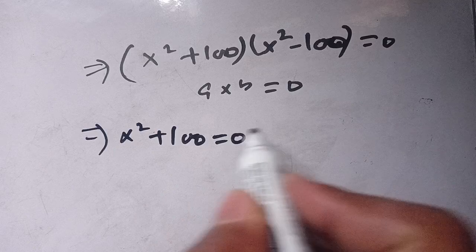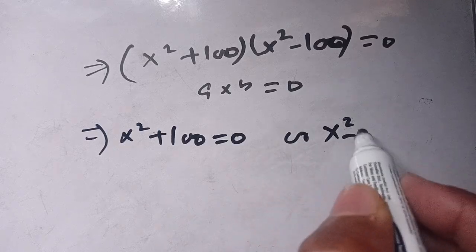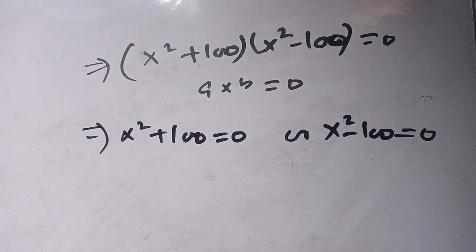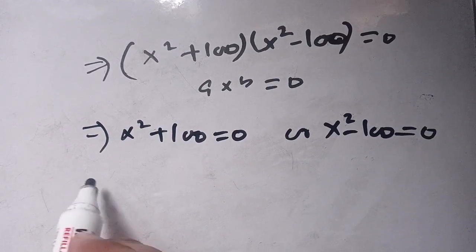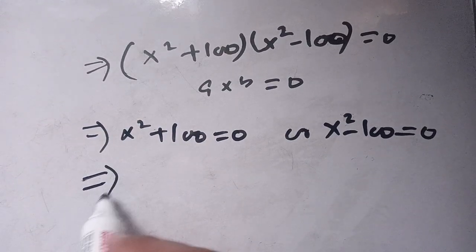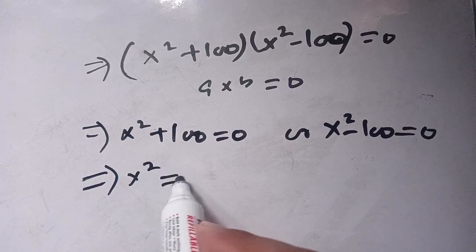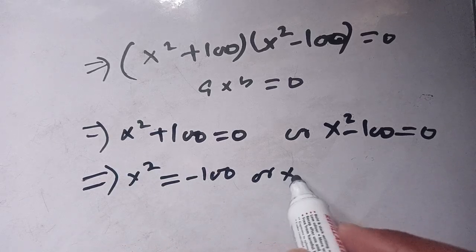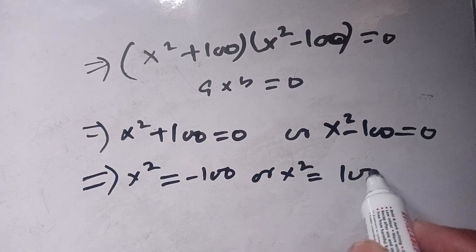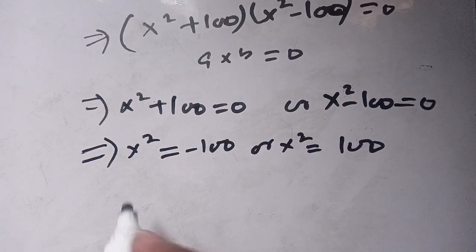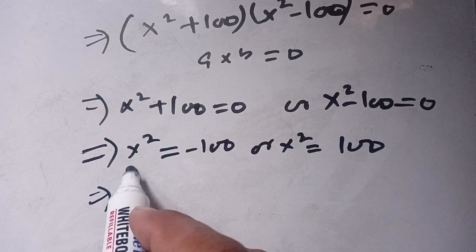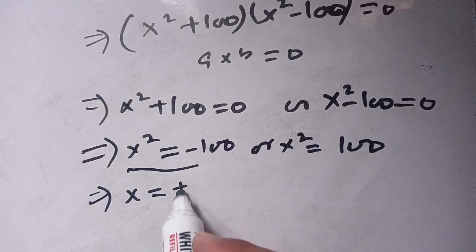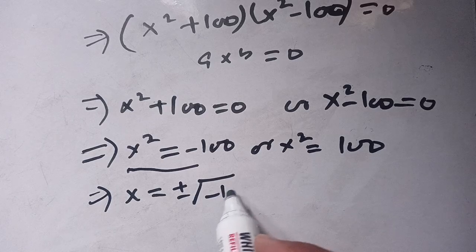Since the product equals zero, either the first factor or the second factor must equal zero. So we get x squared plus 100 equals 0, or x squared minus 100 equals 0. From these we get x squared equals negative 100, or x squared equals 100.